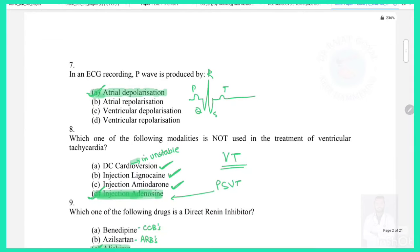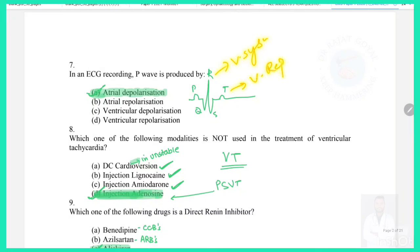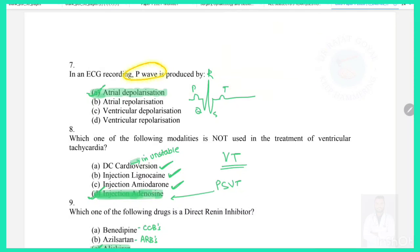Question 7: In ECG recording, the P wave is produced by — this is a straightforward question. The P wave occurs due to atrial depolarization (atrial systole); QRS represents ventricular depolarization (ventricular systole); and the T wave represents ventricular repolarization. The answer is atrial depolarization.